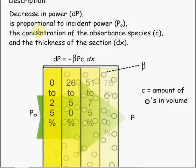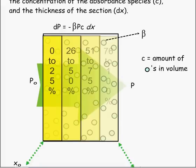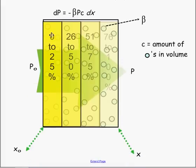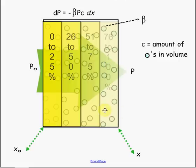The decrease in power is proportional to the initial power times the constant of proportionality, the concentration, and the path length. Here we have 0 to 25% of the power being absorbed over the first section of the path length, then 26 to 50%, then 51 to 75%, and then 76 to 100%.